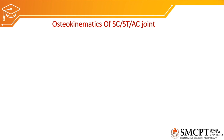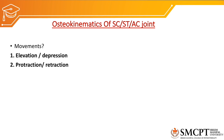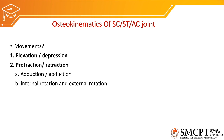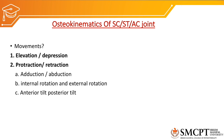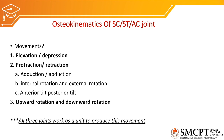The movements that occur in these three joints are elevation and depression, and protraction and retraction. Protraction and retraction has many units of movements — those are adduction and abduction of the scapula, internal rotation and external rotation of the scapula, and anterior tilt and posterior tilt of the scapula. Additionally, there is upward rotation and downward rotation. All three joints work as a unit to produce these movements — that is an important point.